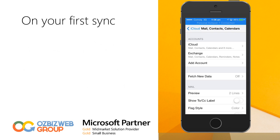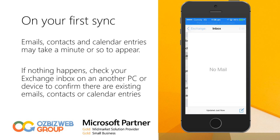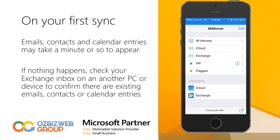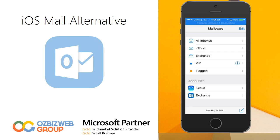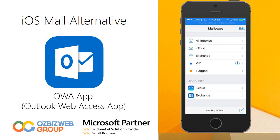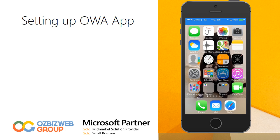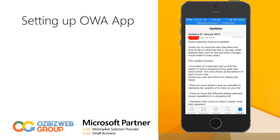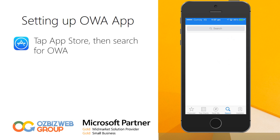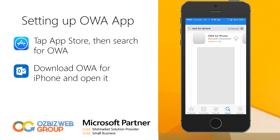If I close out of Settings and go to Mail, my Exchange email is not going to come down straight away because it syncs in the background. It should come down in the next few seconds. Now while that happens, I'm going to show you the other way to set up Office 365 on your phone — and that's with the Outlook Web App, or the OWA app. If we go to the App Store and search for OWA and click on the first result, which is OWA for iPhone, that's going to let us download that.